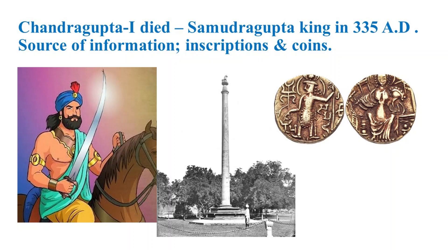We have several sources of information for the history of Samudragupta. One is inscriptions and the other one is coins. The inscriptions include the Allahabad Pillar inscription, the Ironstone inscription, the Nalanda copper plate inscription, and the Gaya copper plate inscription. From these two sources, historians and scholars have developed the history of Samudragupta's rule in the Gupta Empire.